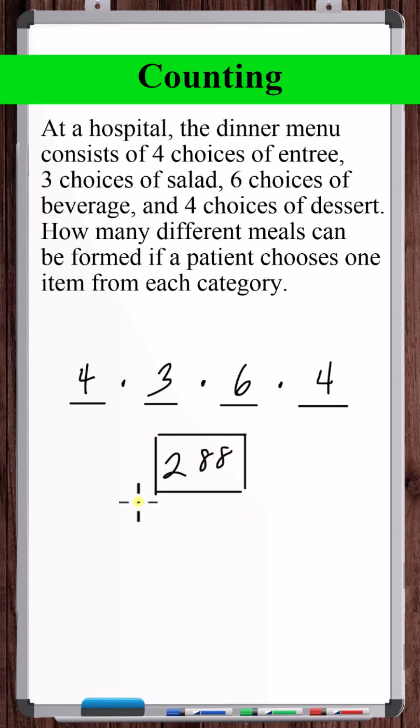Now it's important to note that this is not a permutation or combination problem, and the reason is because for each of these events, we're picking from completely separate groups. There's no overlap in the groups that we're picking from.